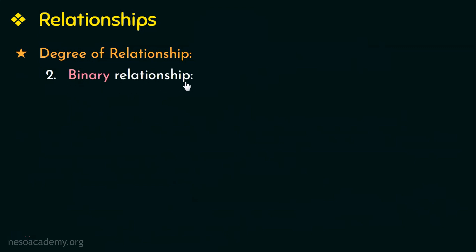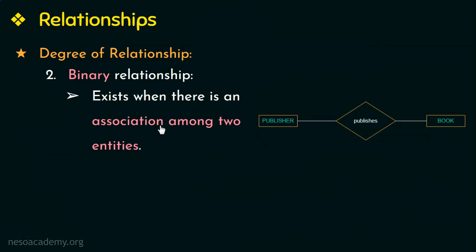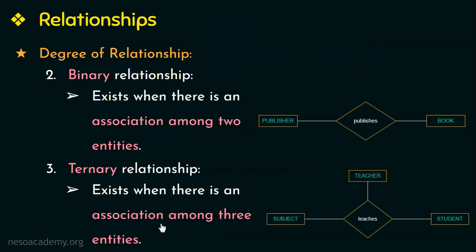A binary relationship exists when there is an association among two entities. Here two entities are linked together and hence this is a binary relationship of degree two. Next, of degree three, is the ternary relationship. A ternary relationship exists when there is an association among three entities. Since three entities are participating in this relationship, it is called a ternary relationship and is of degree three.